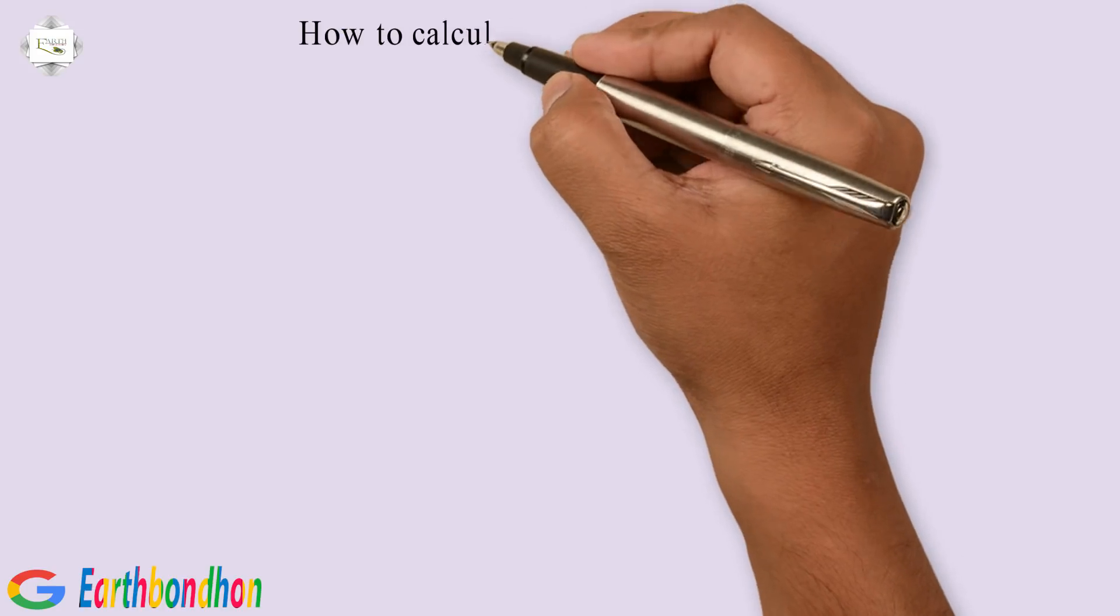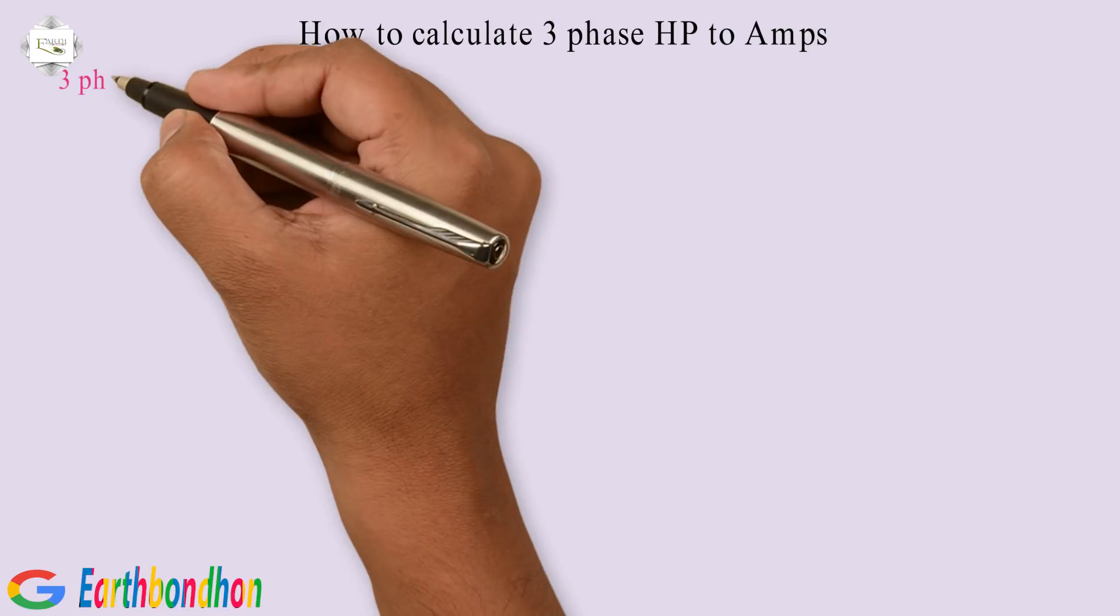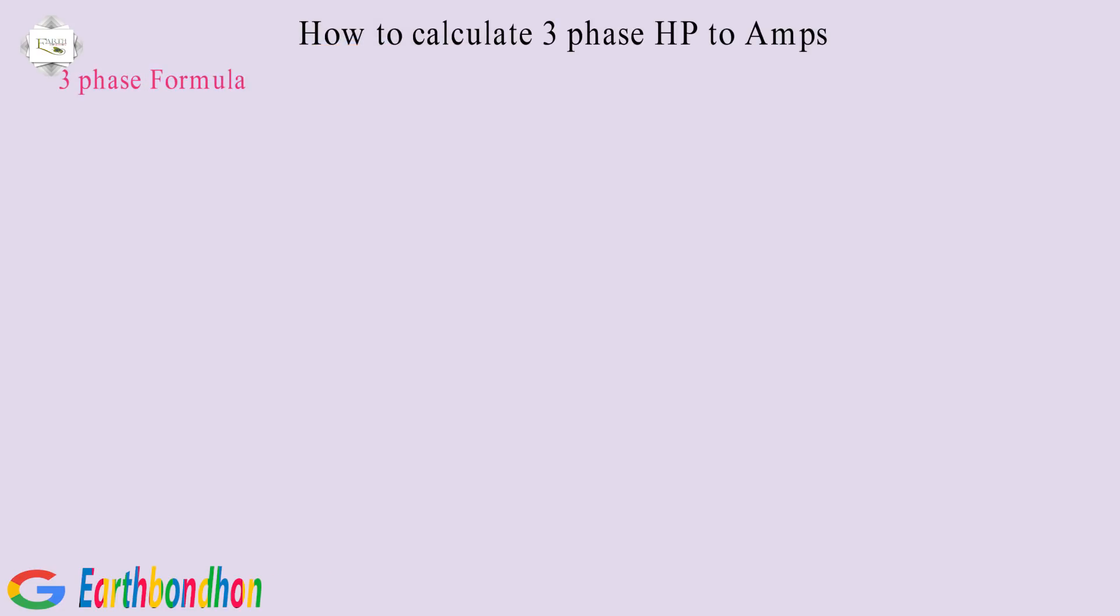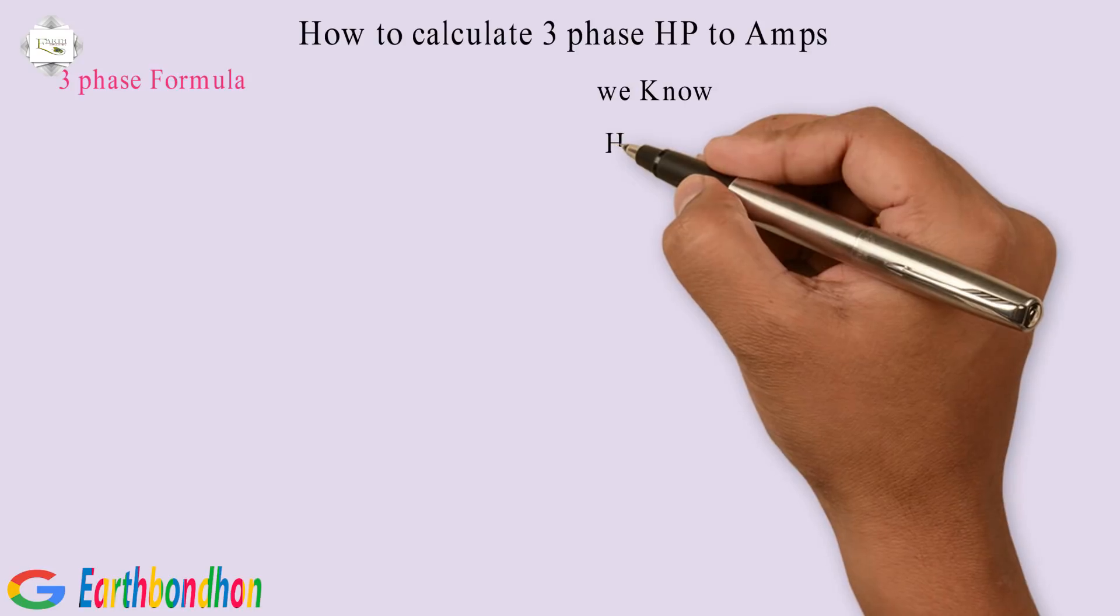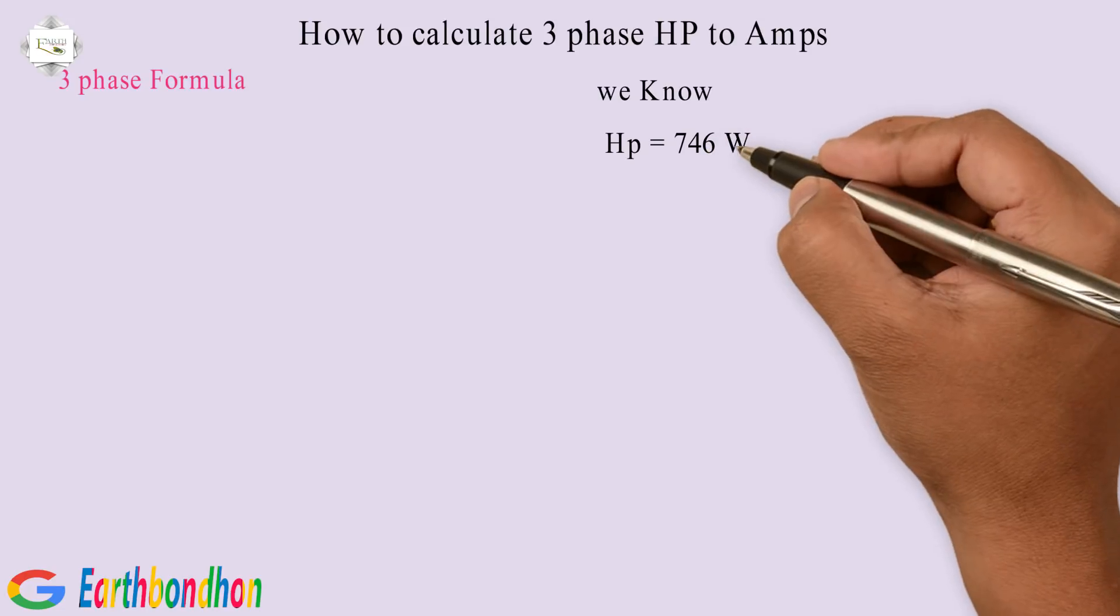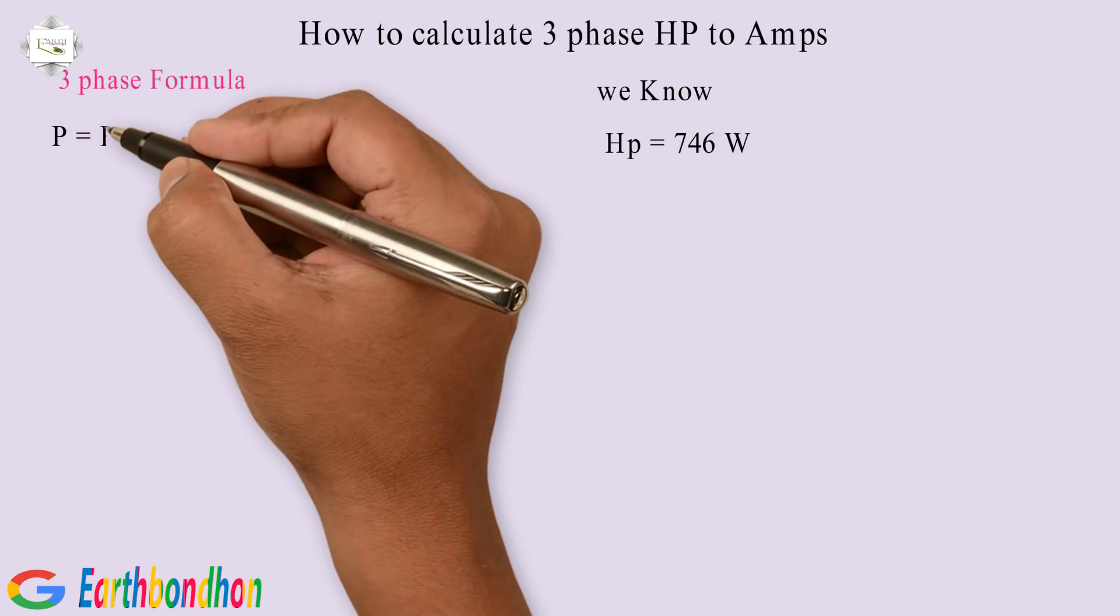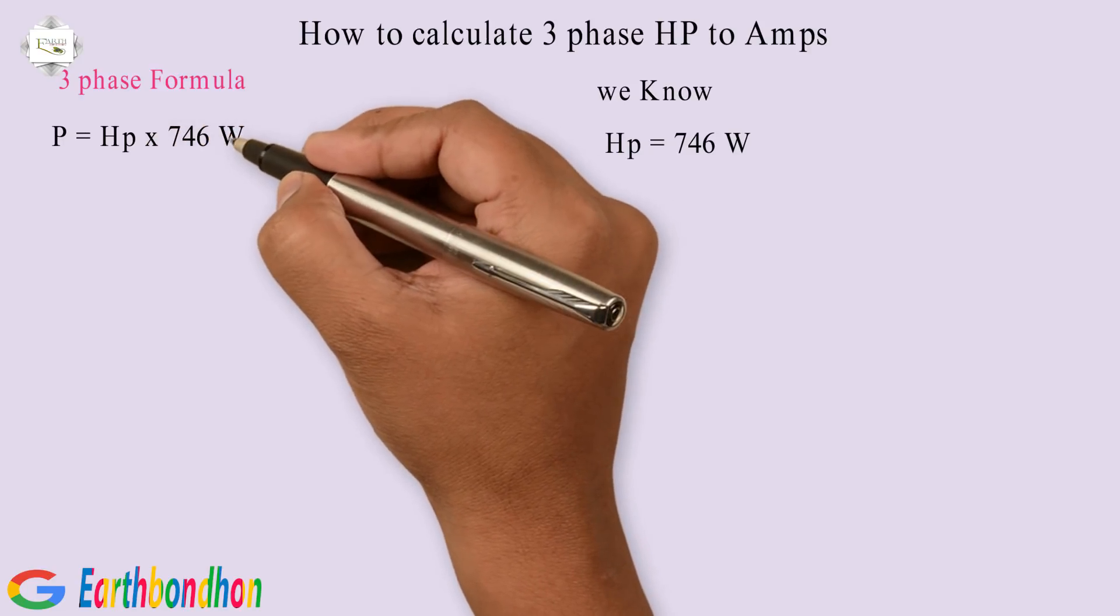How to Calculate 3 phase HP to Amps. 3 phase formula: We know horsepower equals 746 watts. Power equals horsepower multiplication 746 watts.